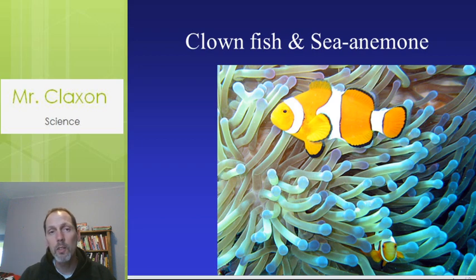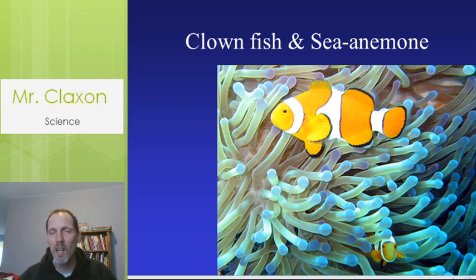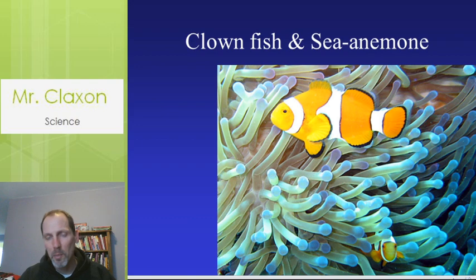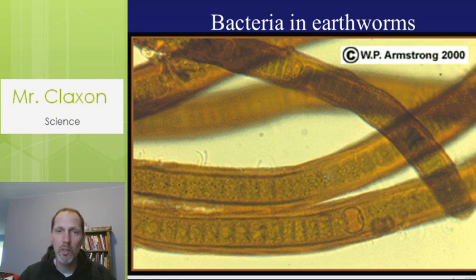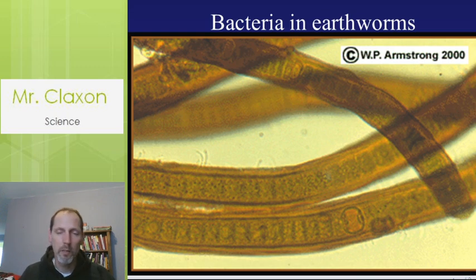The sea anemone provides cover for the clownfish, and at the same time the clownfish lures other fish — they figure if the clownfish can stay safe, maybe they can too. The anemone then stings and captures those fish, making them a food source. It helps both, so we call this mutualism. Another example: bacteria and earthworms, where the earthworms provide a place for bacteria to live and the bacteria help extract nutrients from the soil.